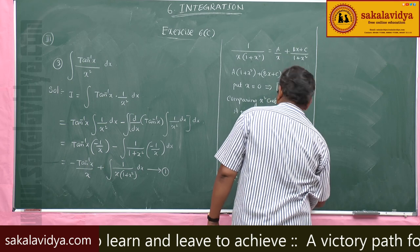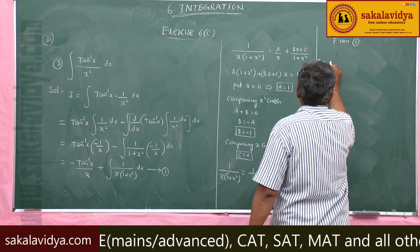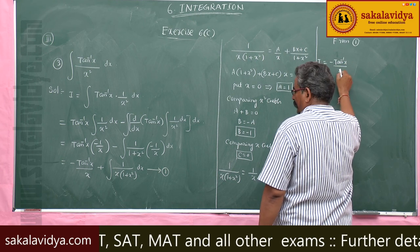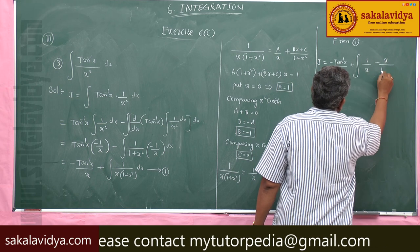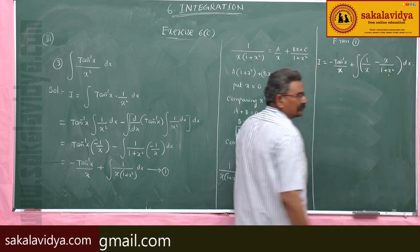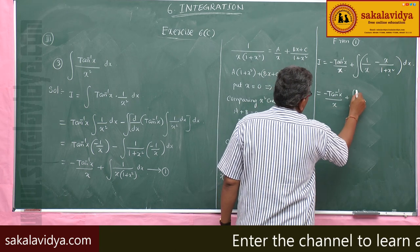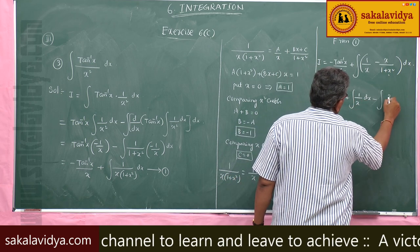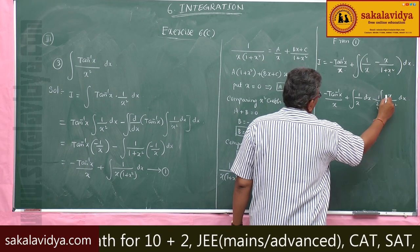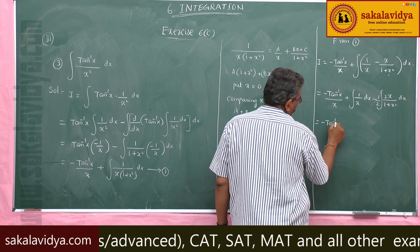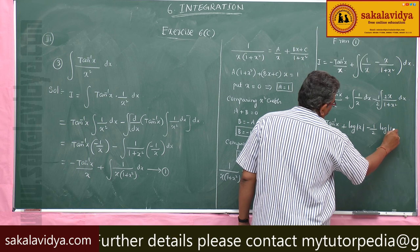So let us integrate it now. From equation 1, I equals minus tan inverse x by x, plus integral of 1 by x minus x by 1 plus x squared dx. For the last term, multiply and divide by 2 to get the form 2x by 1 plus x squared. So the final answer is minus tan inverse x by x plus log mod x minus 1 by 2 log mod 1 plus x squared plus C.